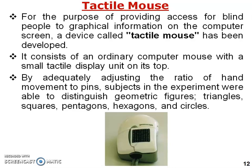Tactile mouse: this type of mouse is developed for the purpose of providing access for blind people to graphical information on the computer screen. It consists of an ordinary computer mouse with a small tactile display unit on its top, featuring small raised dots. A blind person can use these dots to perceive and navigate graphical content, and in experiments subjects were able to distinguish geometric figures such as triangles, squares, pentagons, hexagons, and circles.